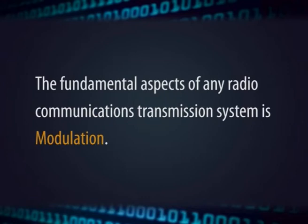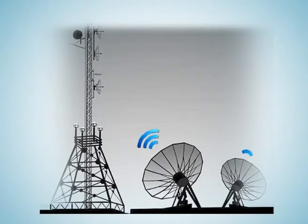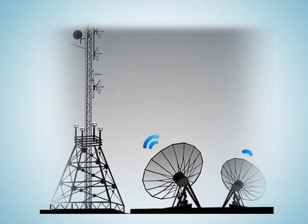If we need to send a signal covering a distance, it must have some potential to travel that distance. With the help of some technique, that traveling potential has to be increased without changing the original signal. The fundamental aspect of any radio communication transmission system is modulation. There are many ways a radio carrier can be modulated, each having its own advantages and disadvantages, and choosing the correct form is a key decision in any system design.